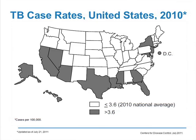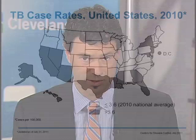Our national average is 3.6 cases per 100,000 individuals. The states shown in dark — California, Texas, Florida, New York, and several others — are generally places with high levels of immigration and still have the highest levels of TB. But much of the country would be considered low to very low prevalence, with rates below the national average of 3.6 per 100,000.